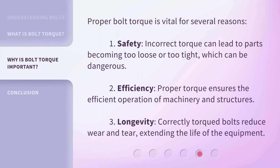Proper bolt torque is vital for several reasons. 1. Safety: incorrect torque can lead to parts becoming too loose or too tight, which can be dangerous. 2. Efficiency: proper torque ensures the efficient operation of machinery and structures. 3. Longevity: correctly torqued bolts reduce wear and tear, extending the life of the equipment.